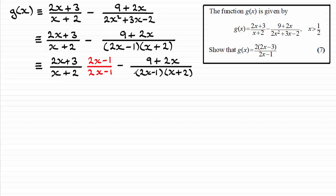So I can now put it all over a common denominator of 2x minus 1 times x plus 2. And if you do that, you should have something like this: 2x plus 3 times the 2x minus 1 minus effectively 1 times the 9 plus 2x.